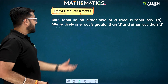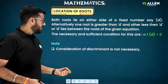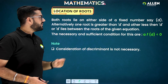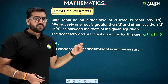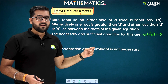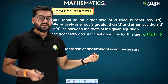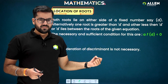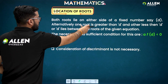Without wasting too much time, let's start with one of the types: both roots lie on either side of a fixed number d. To build command on any particular topic, we should have an idea about the graph and be able to visualize things. With the help of a graph you can visualize very easily.